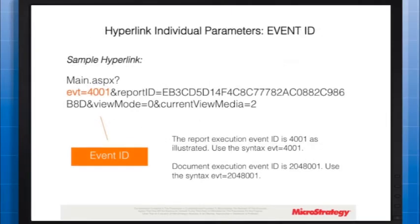First is the event ID. The event ID defines the type of event that the URL performs. There are several different types of events; however, in the MicroStrategy mobile application, you will most often use the event IDs associated with executing another report or document. The report execution event ID is 4001. Use the syntax: evt=4001.